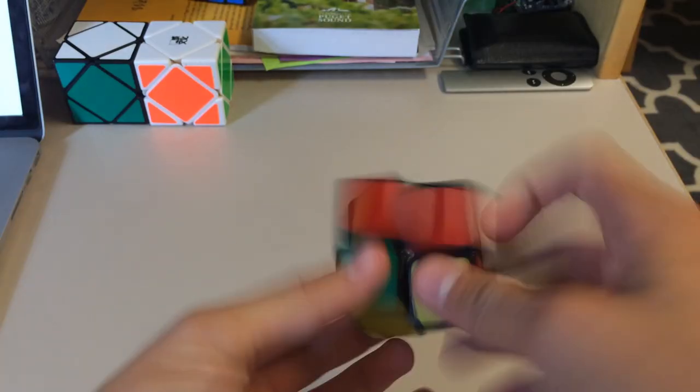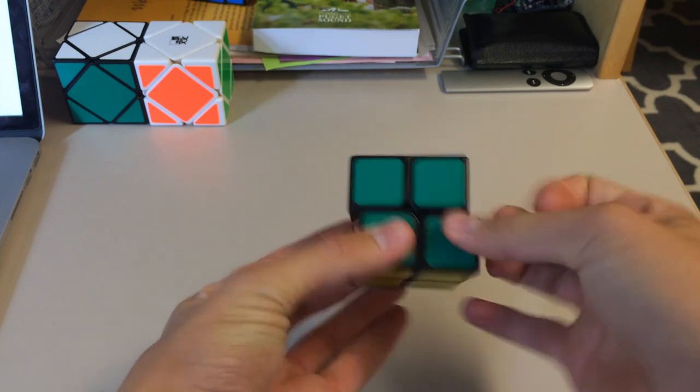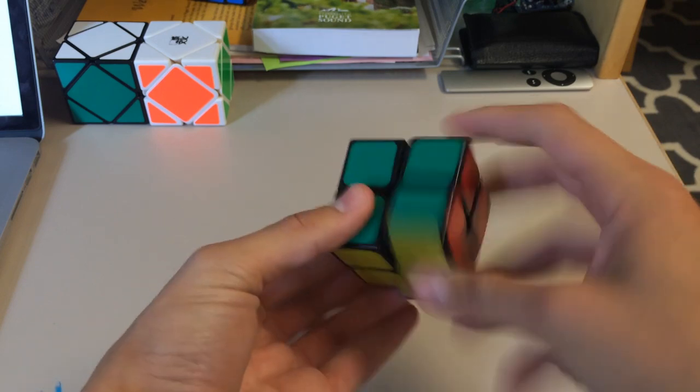Alright, so it's been a couple of days, and I've been messing around with this. I've done some averages. Average of 50, average of 100. And it's really smooth, and I did loosen it a bit.